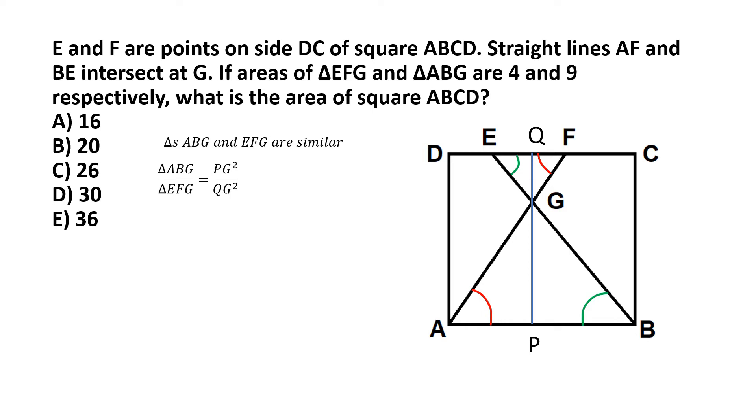And we know that triangle ABG, that area is 9, and triangle EFG, that area is 4. So we can write PG² by QG² is equal to 9 by 4. Now from this we can derive that PG by QG, if we just take the square root of 9 by 4, that comes to 3 by 2.